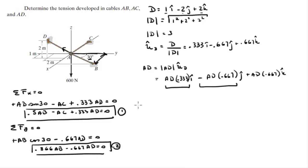The last equation is sum of the forces on the z axis is equal to zero. So you know that the z component of AD is 0.667 AD. It's going up so it's positive, minus the 600 newton force. So 0.667 AD minus 600 is equal to zero.